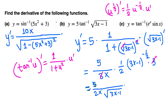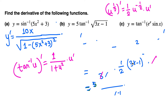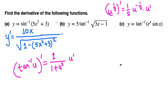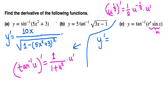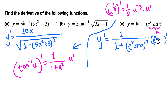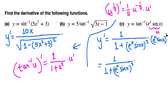Part c is similar. We have tangent inverse of some function of x — we call that u, the inside function. Using the same tangent inverse formula: y prime equals 1 over (1 plus u squared), where u is eˣ sin x, giving 1 over (1 plus (eˣ sin x) quantity squared), times the derivative of eˣ sin x.